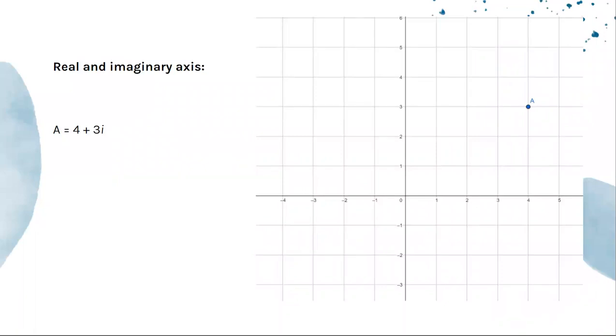I think of complex numbers just as two-dimensional numbers. The x-axis is the real axis, and the y-axis is the imaginary axis. For example, our point A here has an x of 4 and a y of 3, so it's 4 + 3i.